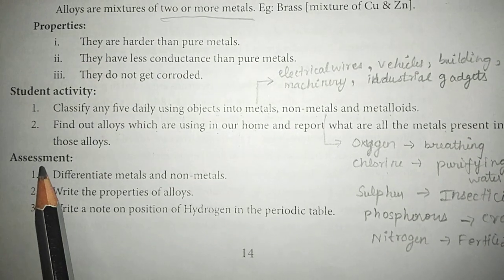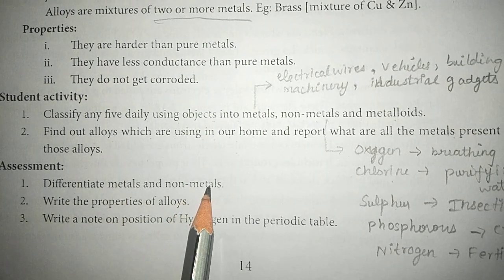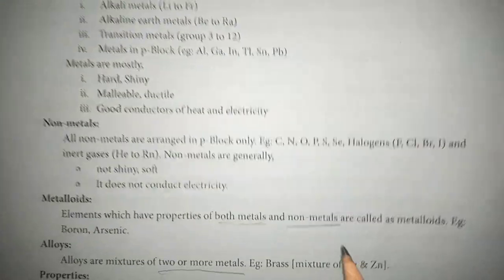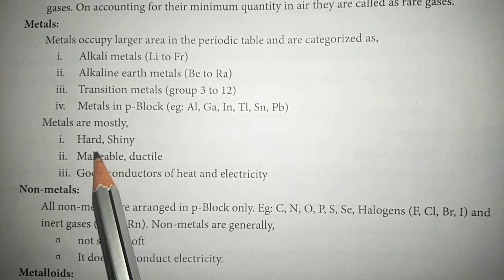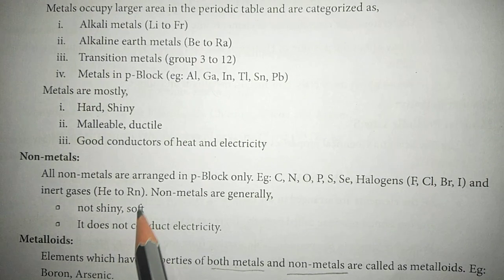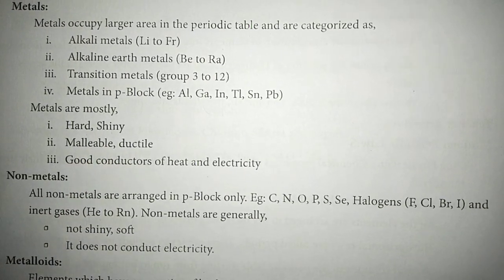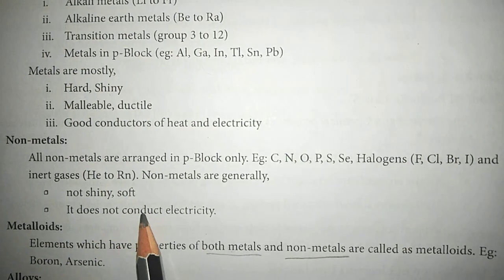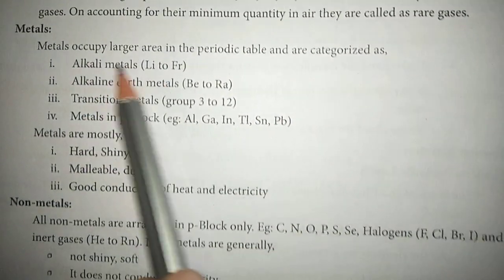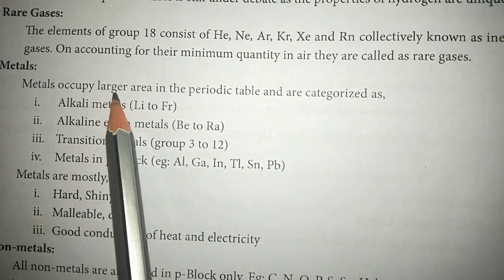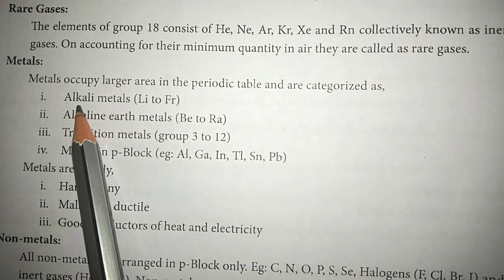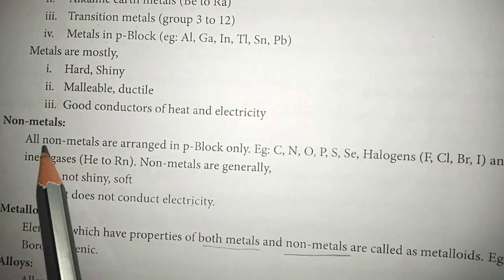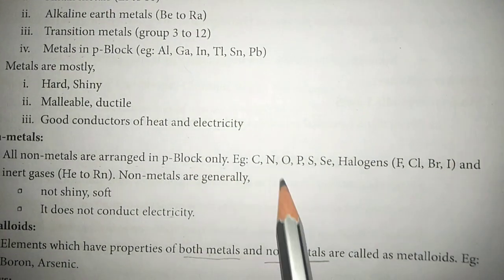Next is the assessment. First question: differentiate metals and non-metals. Metals are mostly hard and shiny, while non-metals are soft and not shiny. Metals are malleable and ductile, and are good conductors of heat and electricity. Non-metals are not good conductors of electricity. Metals occupy a larger area of the periodic table and are categorized as alkali metals, alkaline earth metals, transition metals, and metals in the p-block. All non-metals are arranged in the p-block.